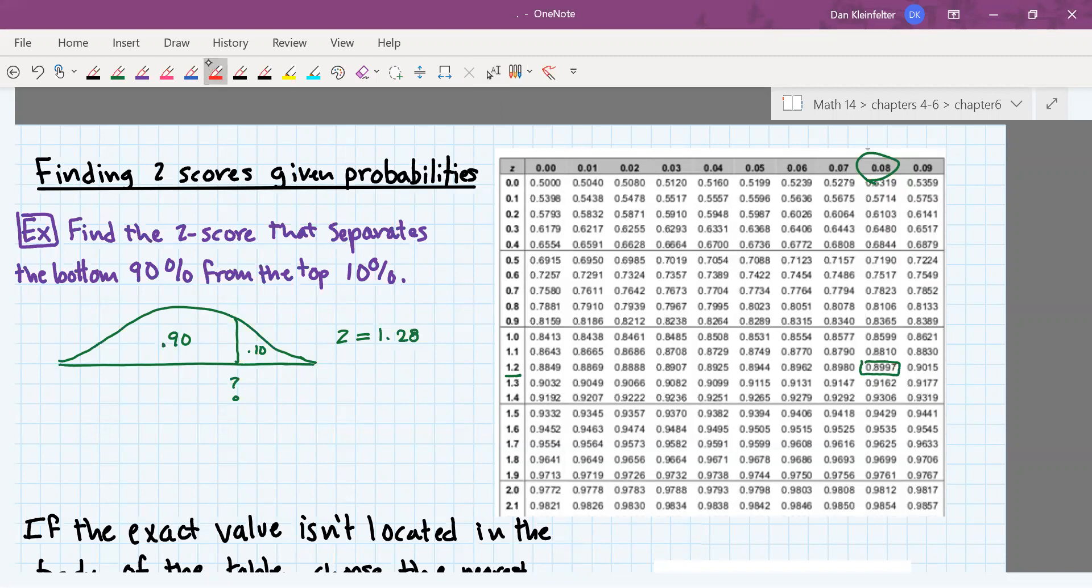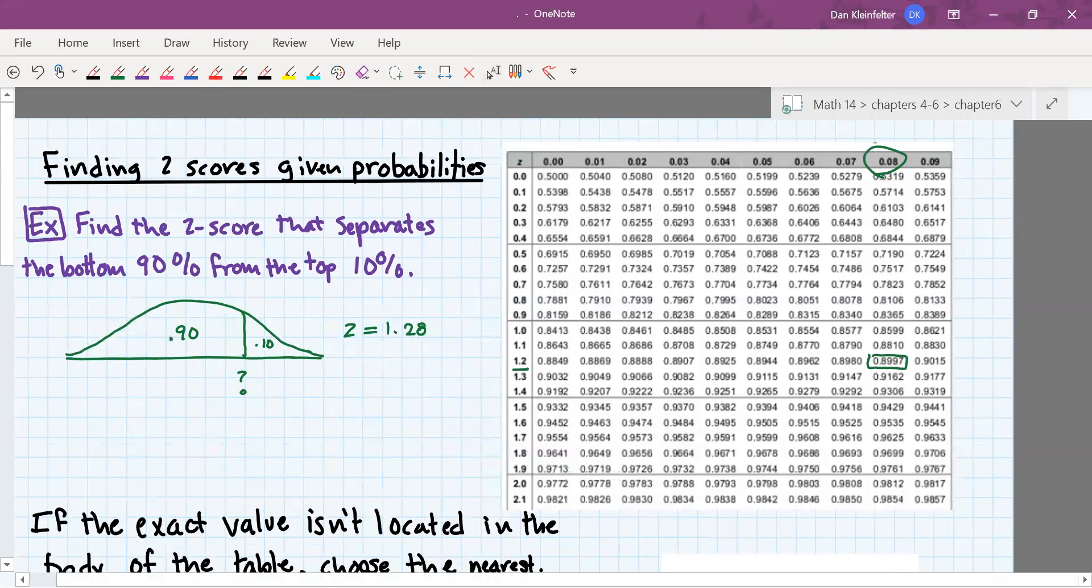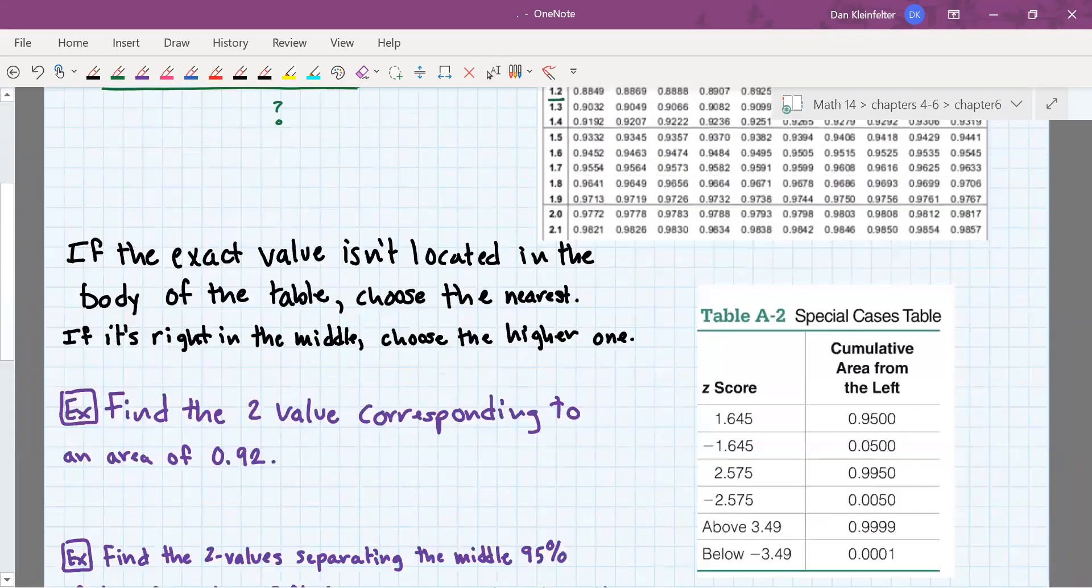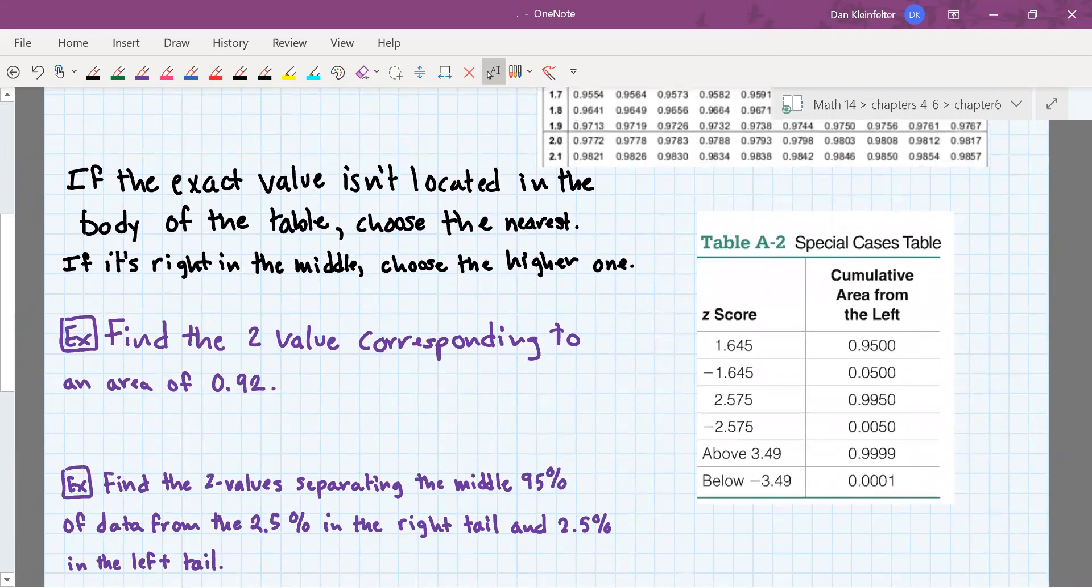If you are taking a look at the table and saying, okay, well, there's 0.9, you're doing it wrong. You want to find the 0.9 in the body of the table, because that's the probability, and you want to find the Z on the outside of the table. If you can't find the exact value in the body of the table, find the one that's close. If it's right in between two values, you want to choose the higher one.